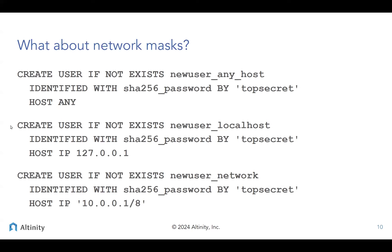This network mask is something to be aware of as a developer, because one of the first problems you may run into is that ClickHouse will give you a somewhat vanilla message saying authentication failed. This network mask is a common way that people run into problems, especially if you're doing things like port forwarding in Kubernetes or other environments where things get tweaked.